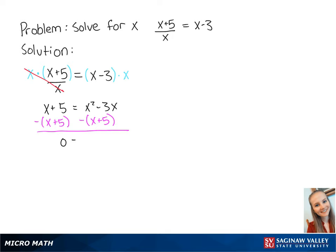This leaves us with 0 equals x squared minus 4x minus 5. We can factor out the right side to become x plus 1 times x minus 5.